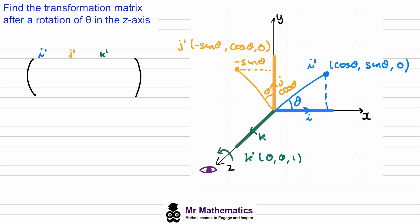So our transformation matrix for rotation about the z-axis becomes: the image of i gives (cos theta, sine theta, 0), the image of j gives (negative sine theta, cos theta, 0), and the image of k gives (0, 0, 1).